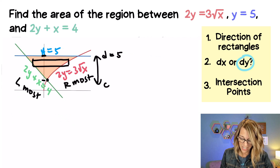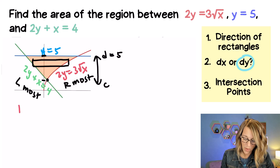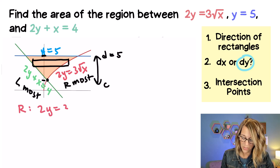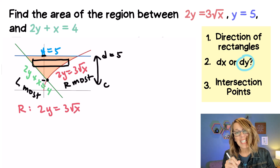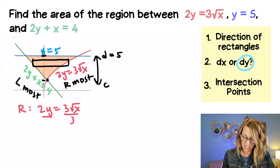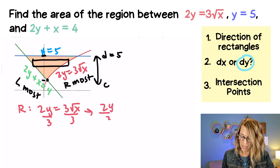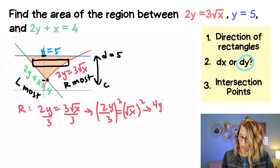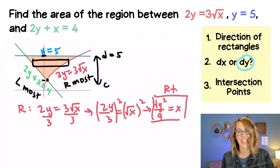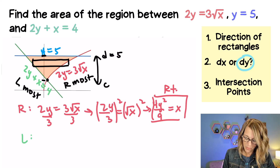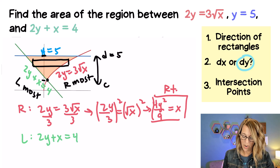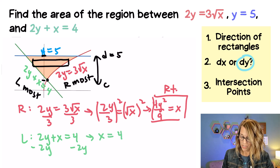Let's do that algebra. My rightmost curve is 2y equals 3 radical x. I want x by itself in terms of y, so I divide both sides by 3 to get 2y divided by 3 equals radical x, then square both sides to get x equals 4y squared divided by 9. That's the new version of my rightmost function. For the leftmost function, 2y plus x equals 4: I subtract 2y from both sides to get x equals 4 minus 2y.